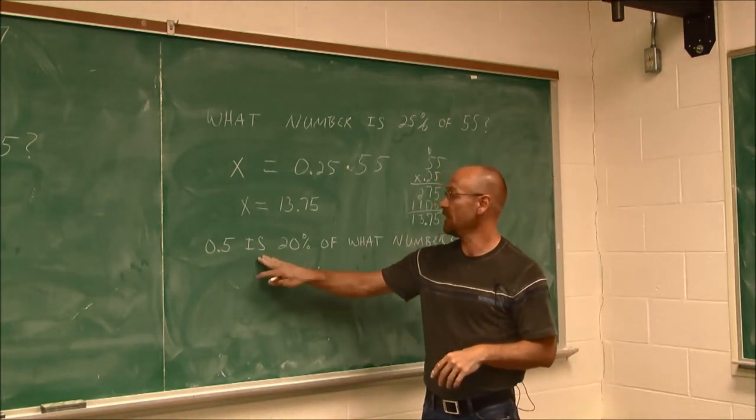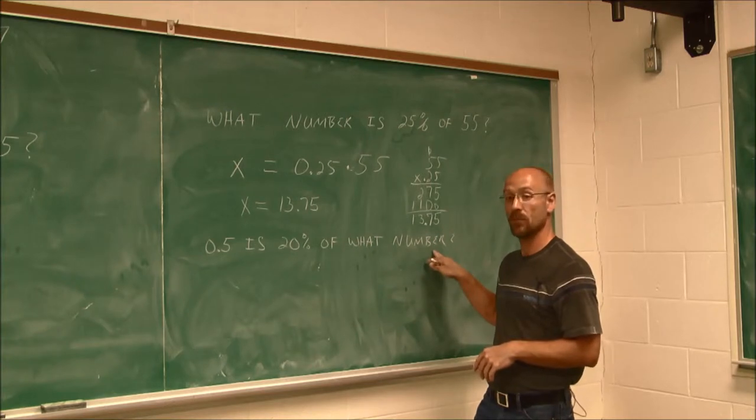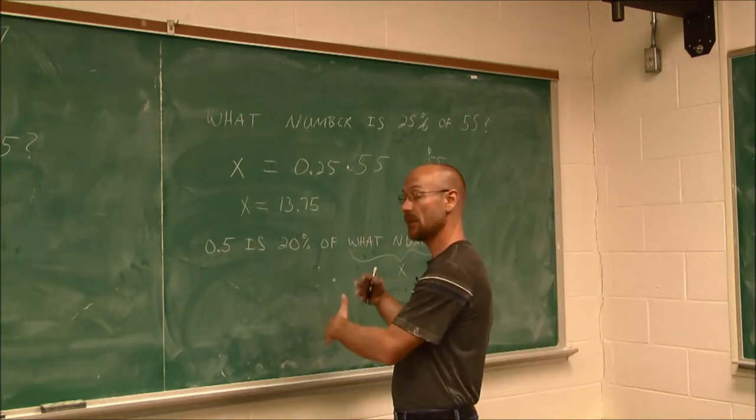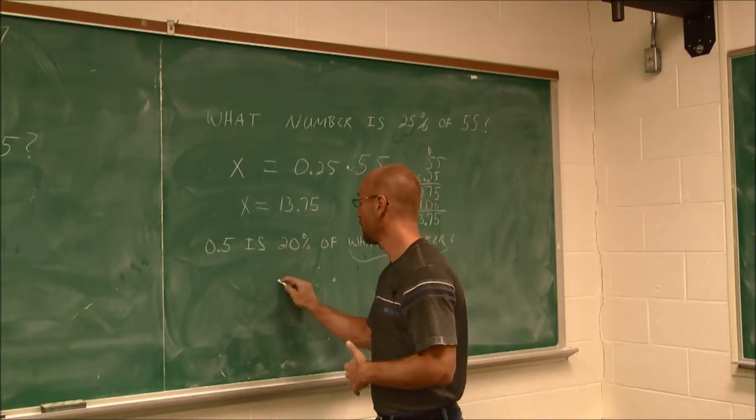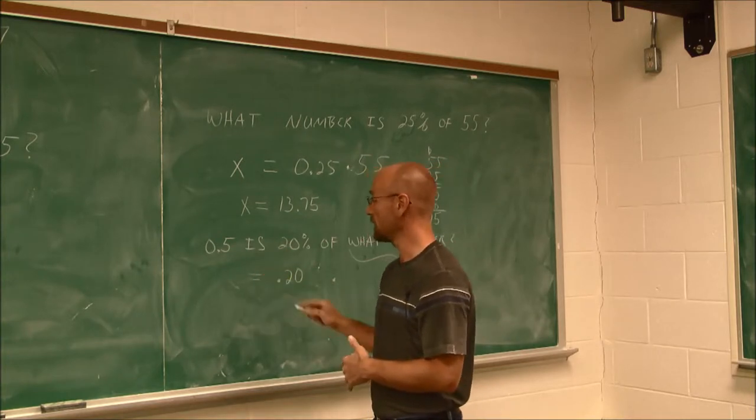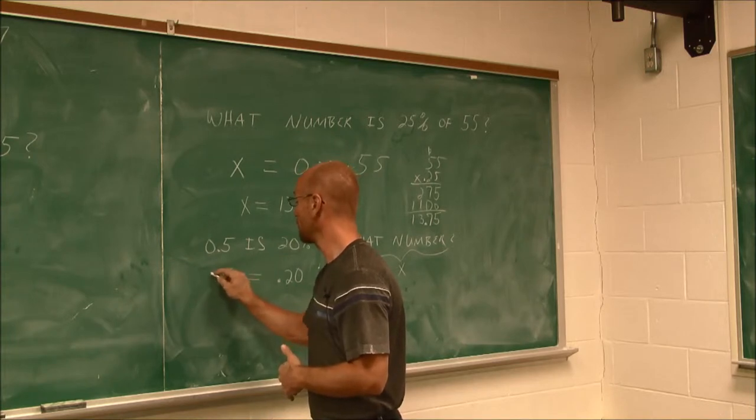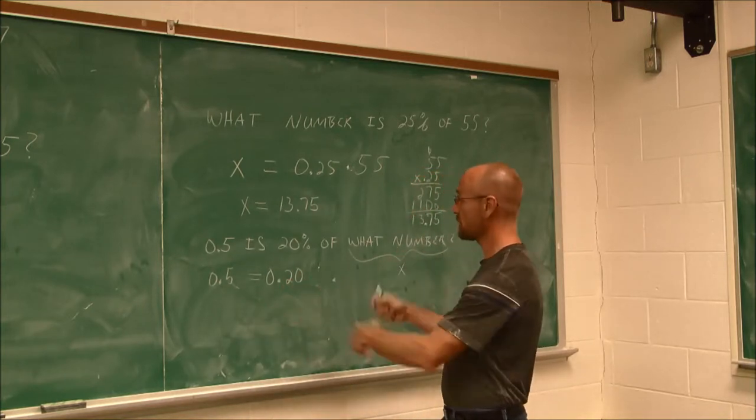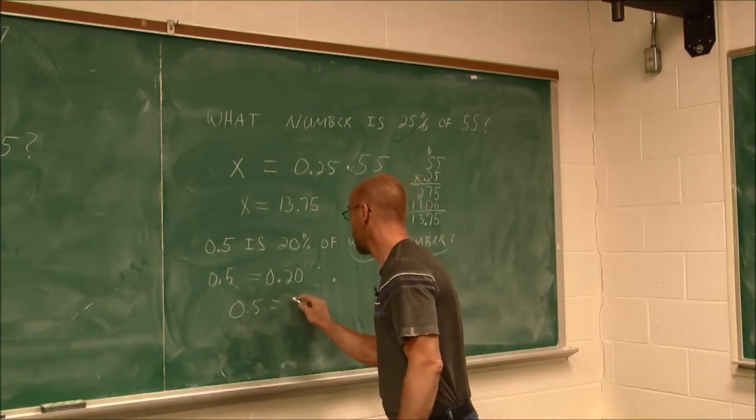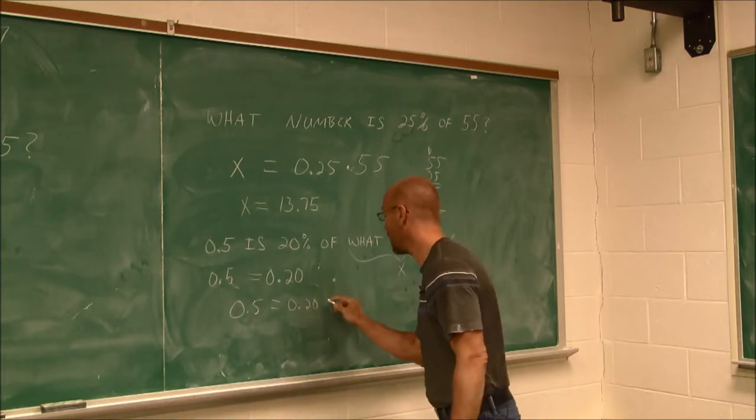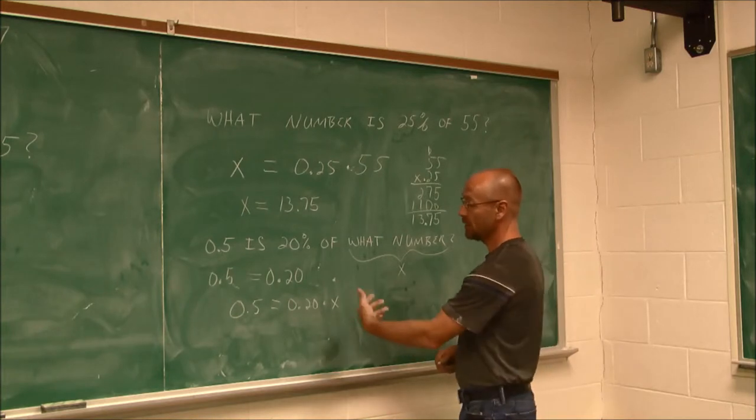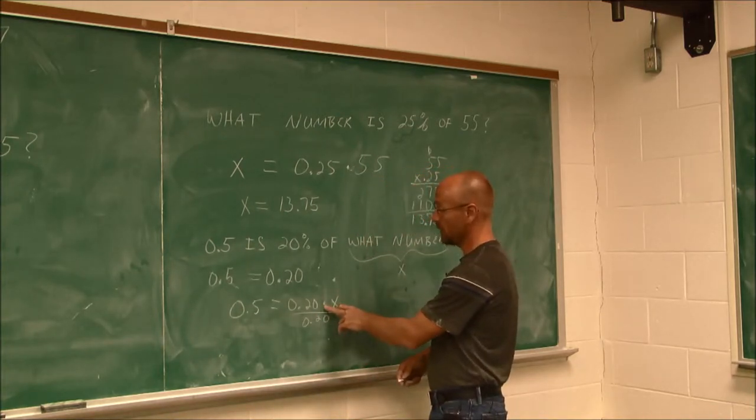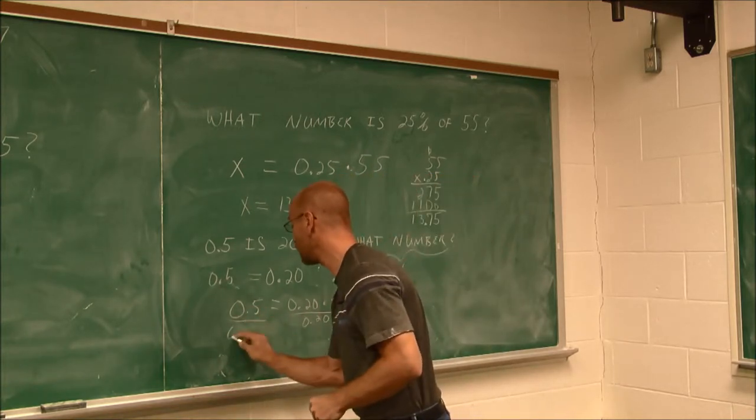All right, let's look at this example here. It says 0.5 is 20% of what number? Well, again, this is my variable. Of tells me to multiply. 20%, I convert that to a number by moving the decimal two spots to the left. 0.20 is translates as an equal sign, 0.5. And I'm going to keep my 0's in there, because I like to have my leading 0's, just so I can identify that decimal point. So if I kind of compress this together, we have 0.5 is 20%, or 0.2, of what number?